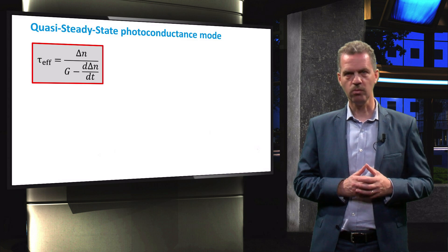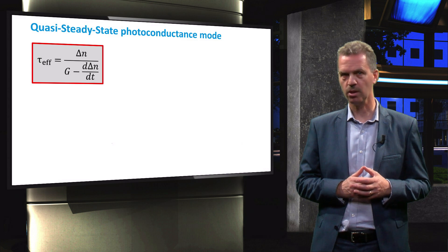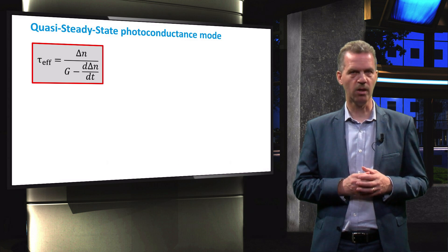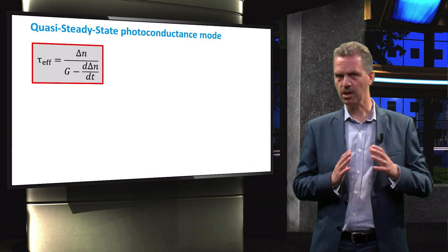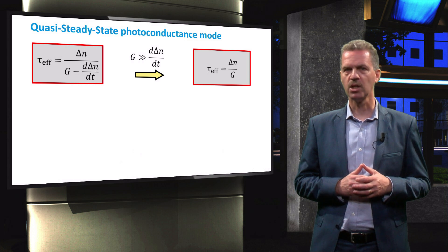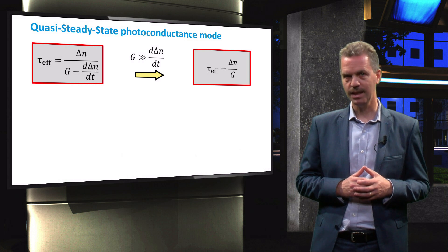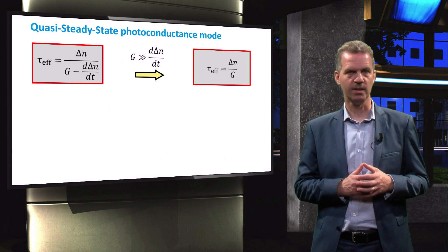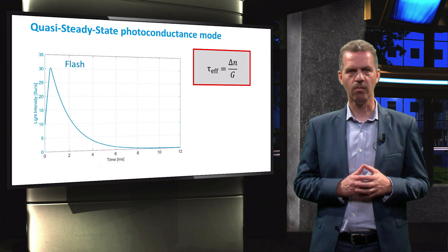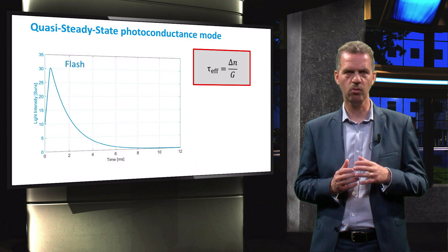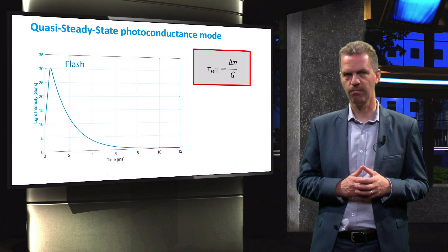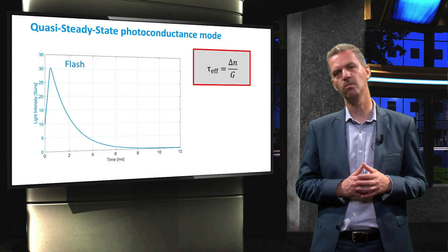The second mode, which is used for cells or wafers with a shorter charge carrier lifetime, is the quasi-steady-state mode. In this mode, the flash duration is much longer than the carrier lifetime. Therefore, the generation rate will be much larger than dΔN over dt, such that the expression is simplified like as shown here. The characteristic decay time of the flash is in the order of 2 to 4 milliseconds, while the light intensity is detected by a calibrated photodiode that is embedded in the stage next to the wafer.